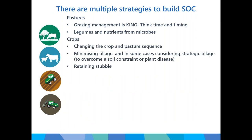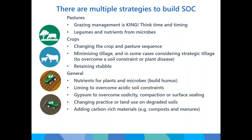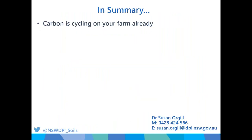To increase soil organic carbon, we've got a range of strategies. For pastures it's about grazing management, legumes for nitrogen, and a healthy functioning system for nutrient acquisition. For crops it might be tinkering with the pasture phase, minimizing tillage, retaining stubble, and some strategic tillage. In general, ensure there are enough nutrients for plants and enough organic matter going in for microbes to build humus. New and exciting areas include multi-species planting, biostimulants, and microbes preferentially selected to store stable carbon.